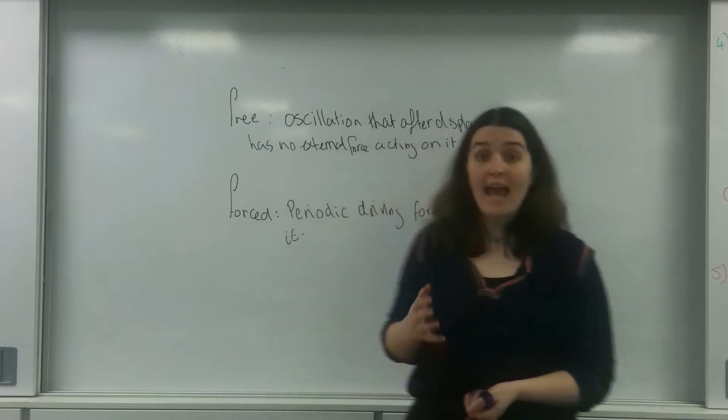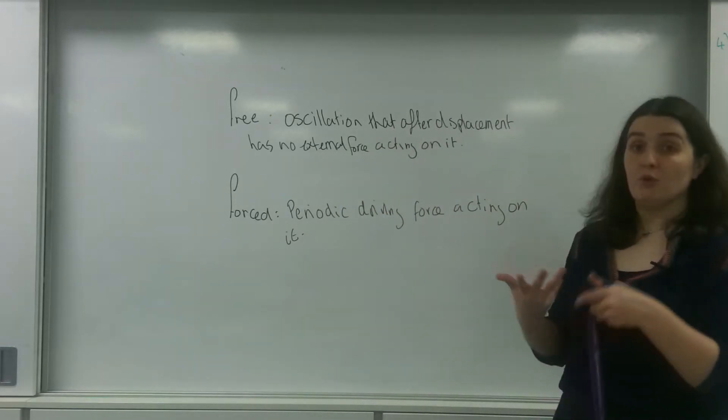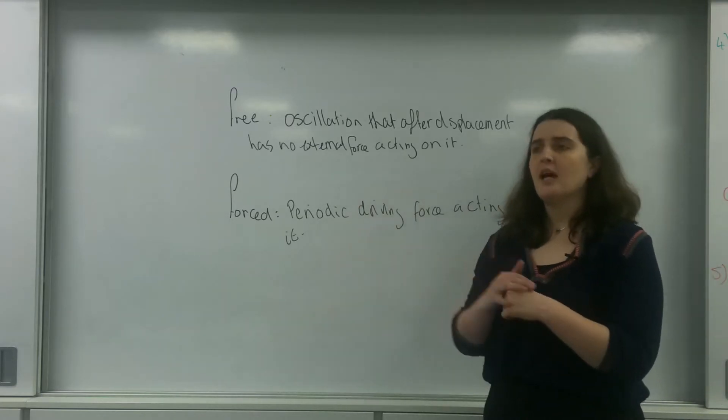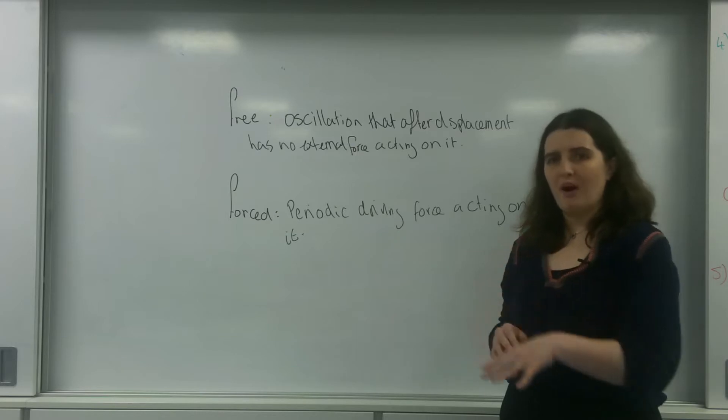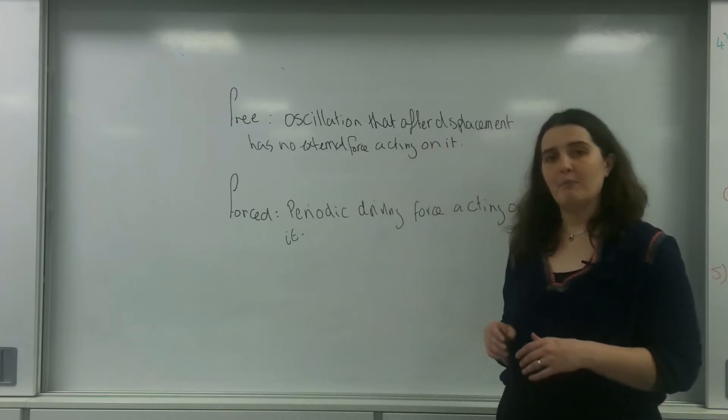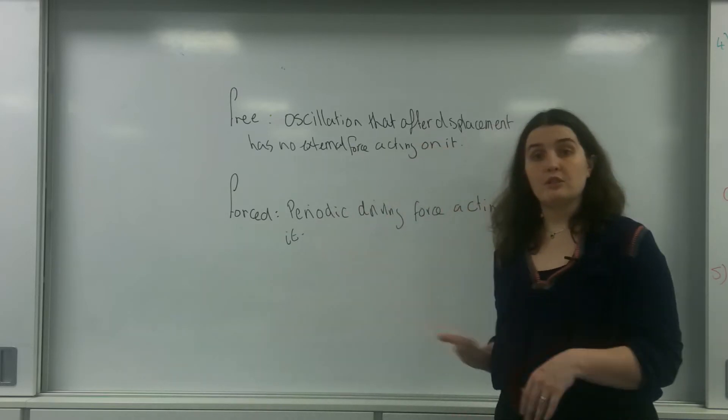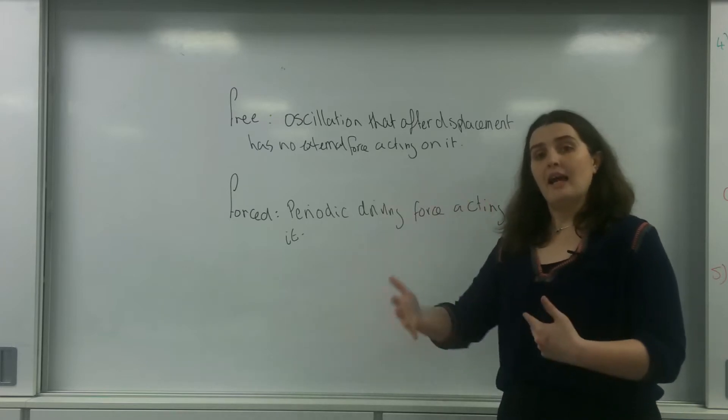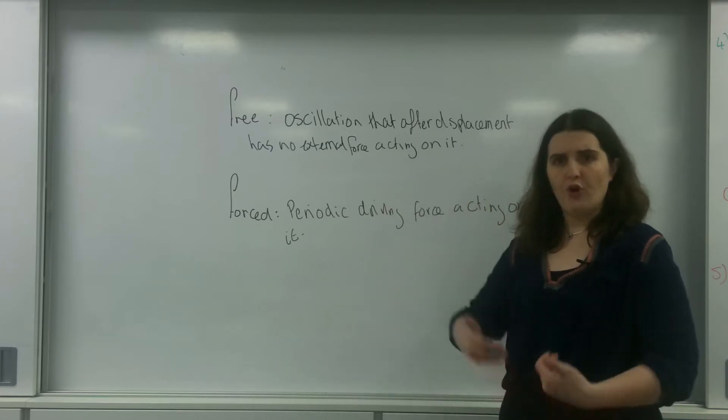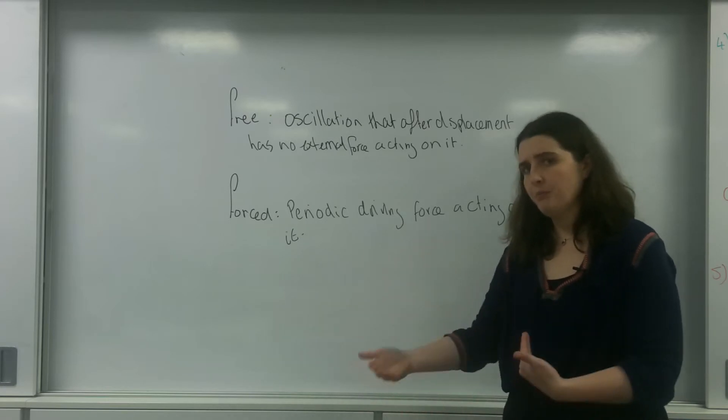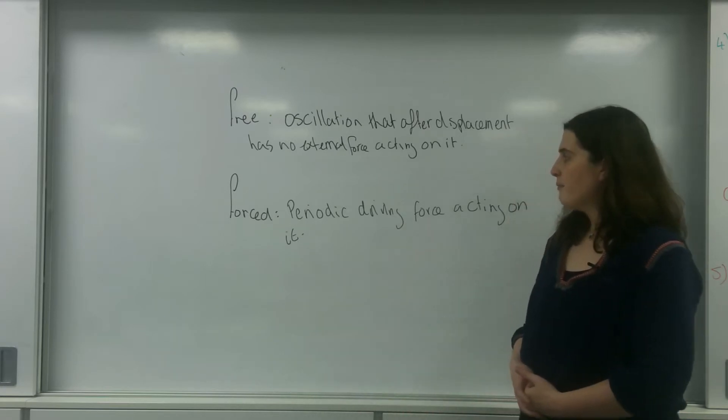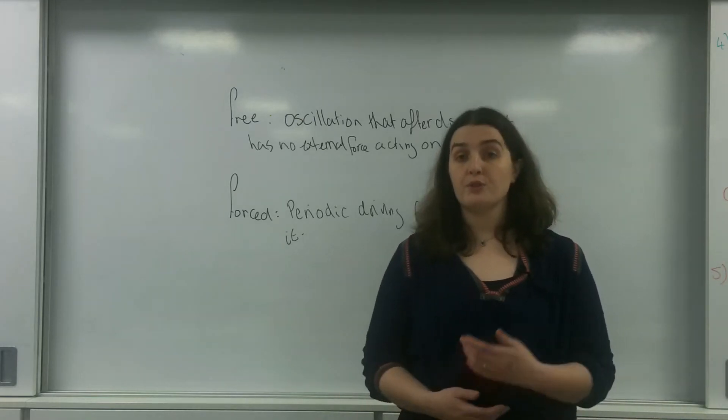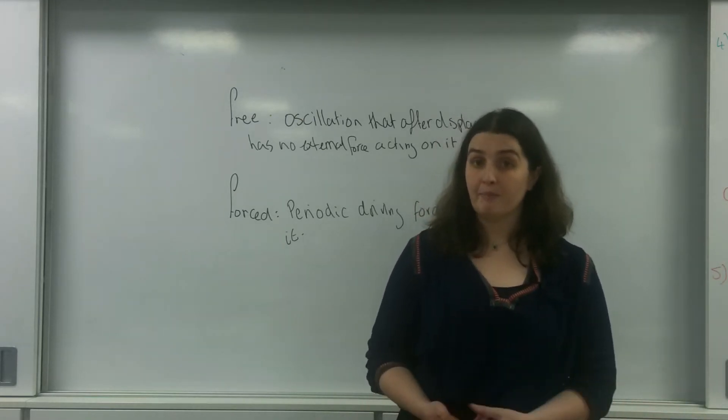Now this forced oscillation can come from all sorts of different things. For example, you could have a car with speed bumps where you go over one and then you go over one after a time period. That is a periodic driving force because you're having a force acting on it over a set of time. It's not just a one-off, it's happening twice, so there is a time period to it. Now this driving force can be a force that is exerted on it from an external source, or it can be things that happen with damping.